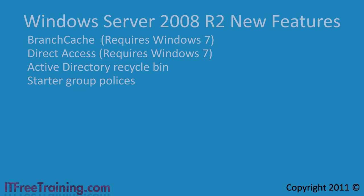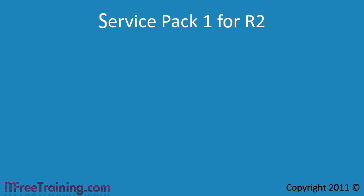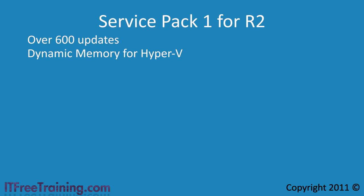Next are the features that Service Pack 1 adds to Windows Server 2008 R2. Service Pack 1 contains many improvements and fixes based on customer feedback — there are over 600 updates and fixes. A lot of these are available through Windows Update, but installing one Service Pack is generally a lot easier. As well as these updates, there are two major features added with Service Pack 1. The first is Dynamic Memory, a new feature for Hyper-V.